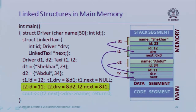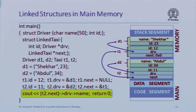We can print T2.NEXT->DRV->name. What does this mean? Go to T2, access the NEXT member, dereference it (arrow), then access the DRV member, then dereference that (another arrow) and access the member named 'name'. T2.NEXT points to T1, T1.DRV points to D1, and D1's name is "Shekhar". So this prints "Shekhar".